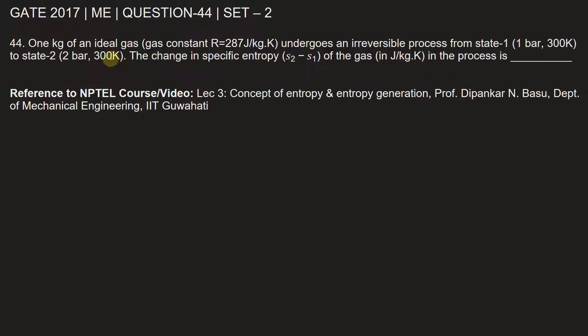The temperature is not changing, which means it's an isothermal process. The change in specific entropy S2 minus S1 of the gas in joules per kilogram Kelvin in this process, as mentioned, is for an isothermal process.